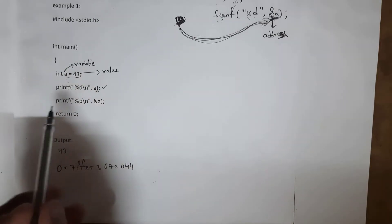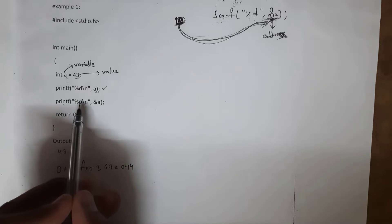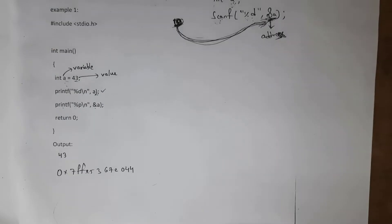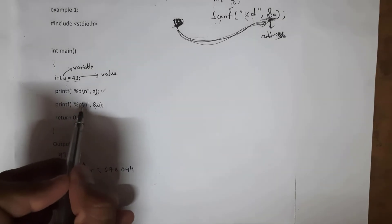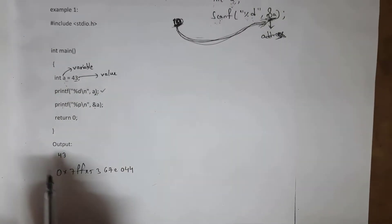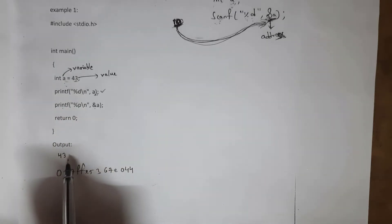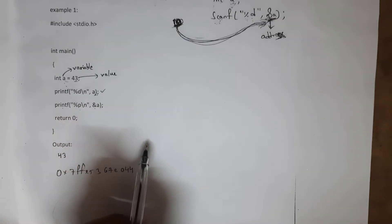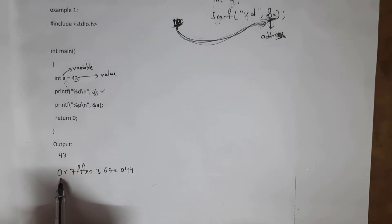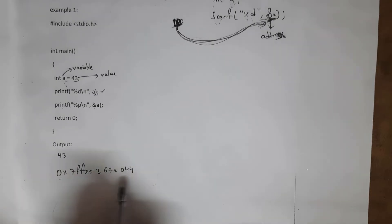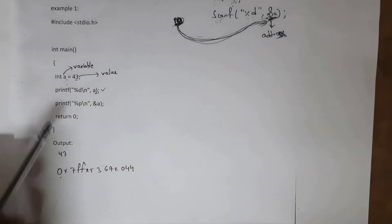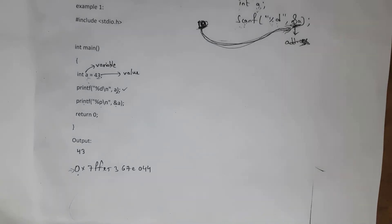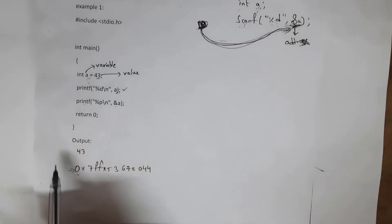To find the address of variable a, I need to write printf with %p, where %p represents pointer, and use &a for the address. In printf you can use &a where & represents address. So I wrote printf with %p and &a — whenever I run this printf function I will get the address of variable a. The output for the first printf is 43, and for the second printf with %p and &a I get the address of variable a, which is 0x7ff. This is the address where variable a is stored.